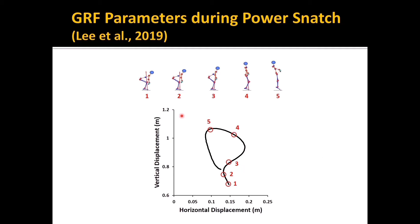Let me show you both vertical and horizontal movements occurring during the power snatch. This is the trajectory of the bar, and there are five events here — one, two, three, four, five — each corresponding with a number on this trajectory. The vertical axis means the vertical displacement of the bar, and the horizontal axis means the horizontal displacement of the bar. Based on this graph, you can see both horizontal and vertical movement, which is why the power snatch is not a pure vertical movement.